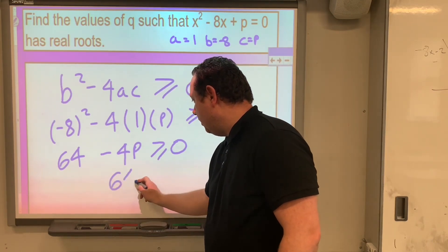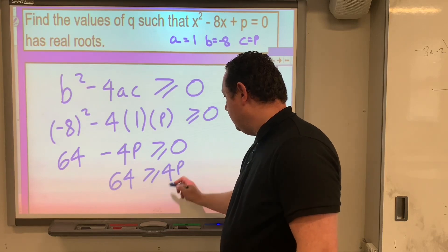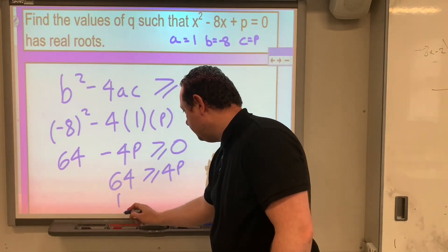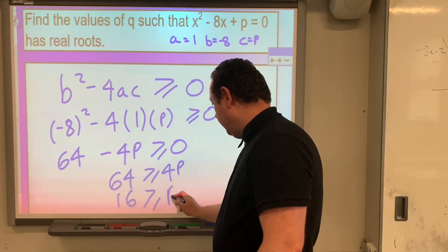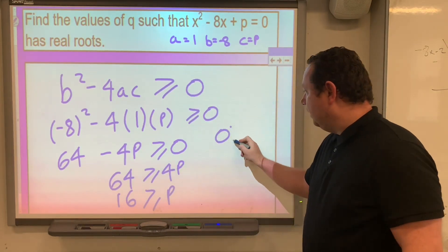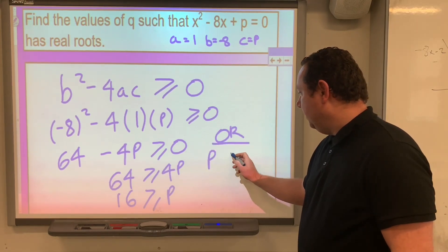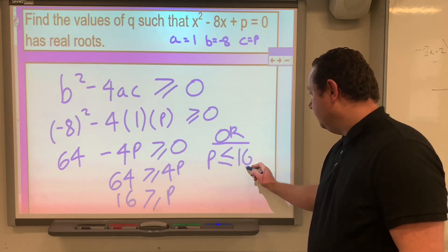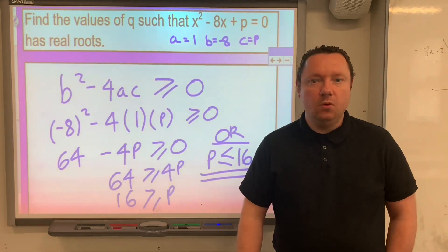So we've got 64 is greater than or equal to 4p. Or dividing by 4, 16 is greater than or equal to p. Or to put it another way, reading it backwards, putting p on the left, p is less than or equal to 16. And that's us solved. That simple question.